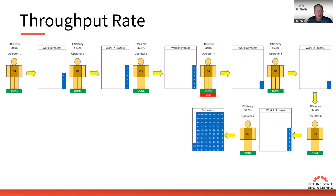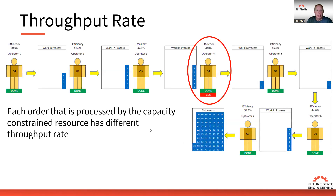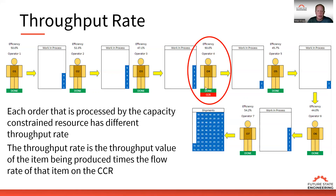If we get longer lead times we're going to lose business, and if we can't deliver on time we're going to lose business — our customers will go somewhere else. We want to be careful about what sales we take when we have an internal constraint. The throughput rate is determined by the capacity constraint resource. Each order processed by that constraint has a different throughput rate, and we look at the flow rate those items can be produced at. Understanding flow rate and throughput value lets us calculate the impact on the organization, because the capacity constraint resource determines the output of the system.